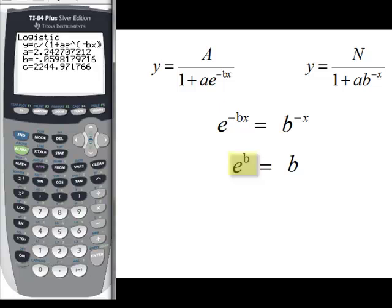It turns out that e to the b, the b being the b we get from the calculator, is equal to the b that WebAssign wants. I know it's a little confusing using the same letter. Notice one is italicized, one is not. They're not the exact same b.